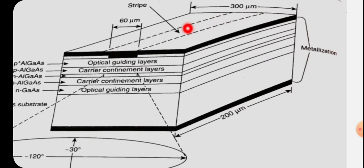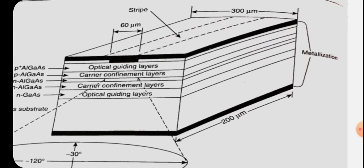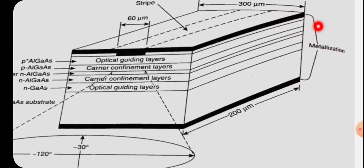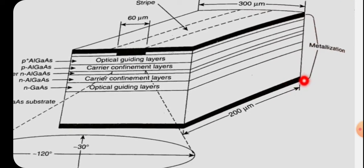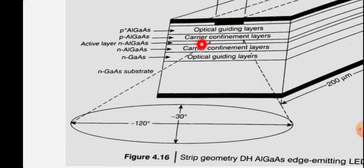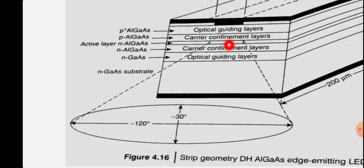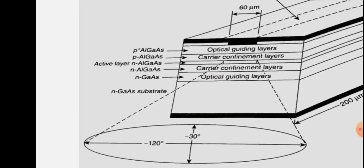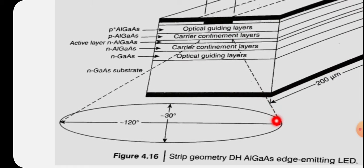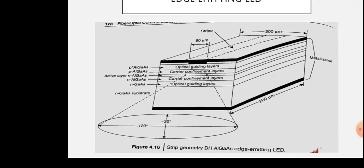There is also metalization provided, which is used to make metallic contacts. The optical light is emitted at the edge of the structure from the active region. The light pattern is in the Lambertian pattern, which is similar to an elliptical pattern.